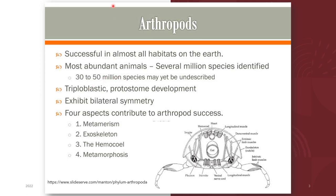In terms of their development, the arthropods have a triploblastic and protostome development. Triploblastic development means that they have developed from the three primary germ layers: the ectoderm, the mesoderm, and the endoderm. They also exhibit bilateral symmetry, which is a symmetry in which similar anatomical parts are arranged on opposite sides of a median axis, so that only one plane can divide the individual into essentially identical halves.